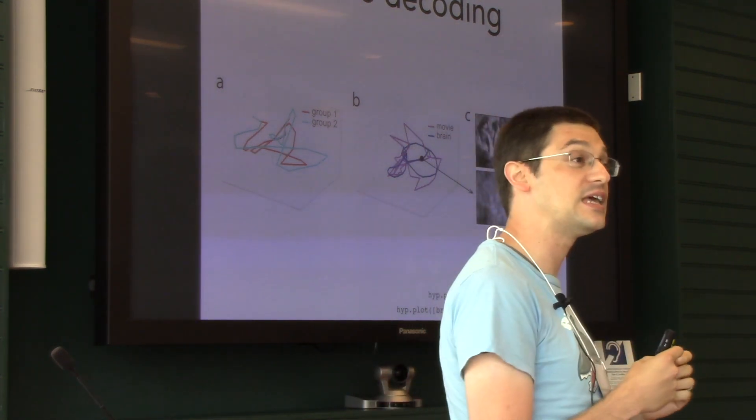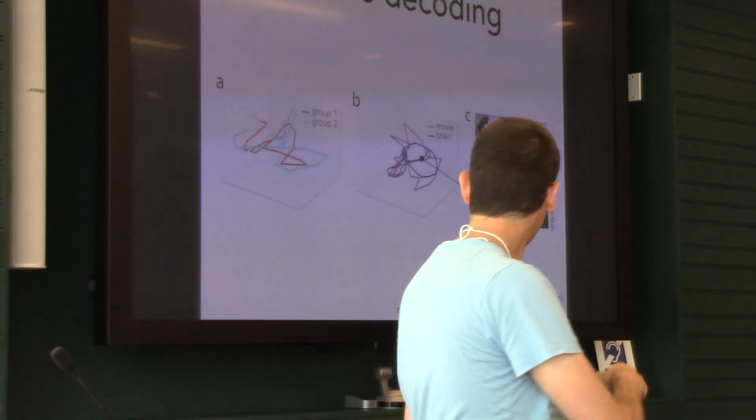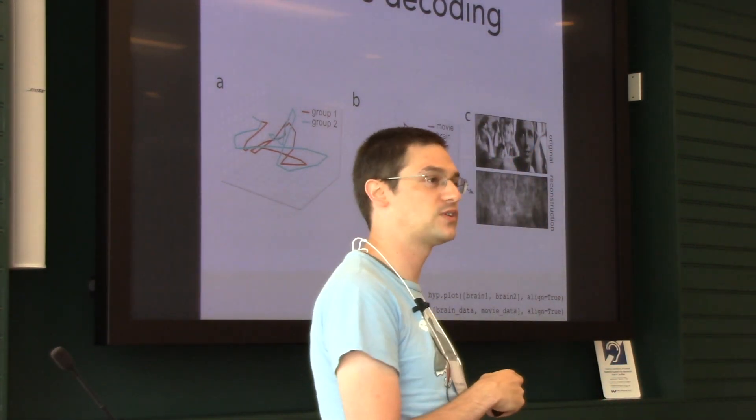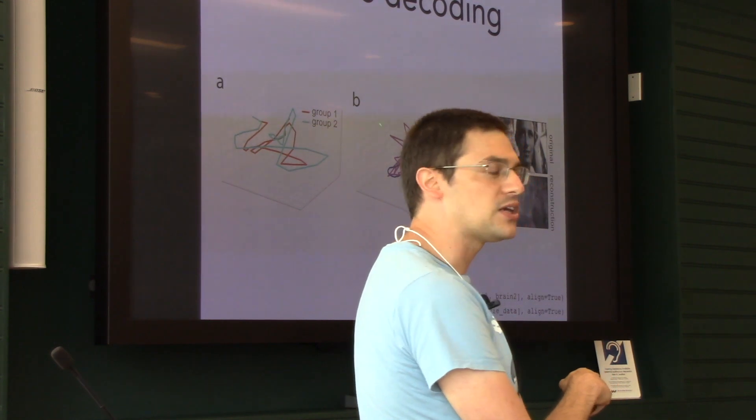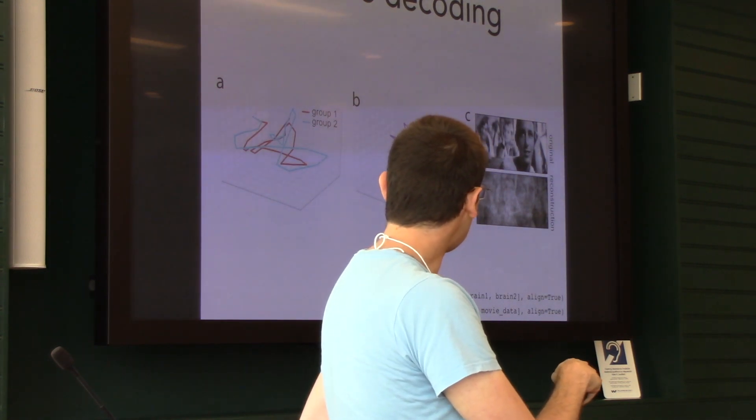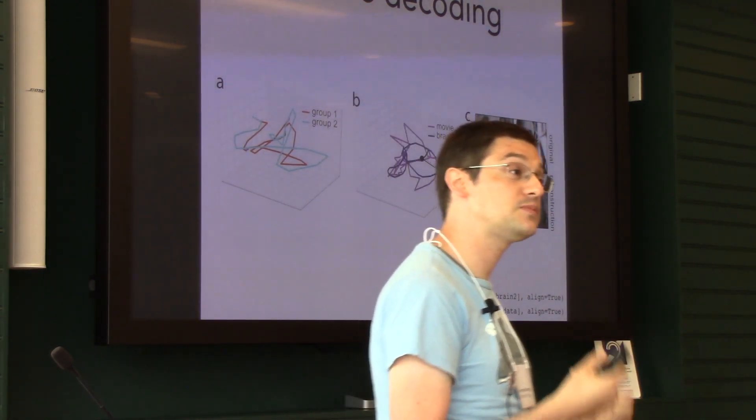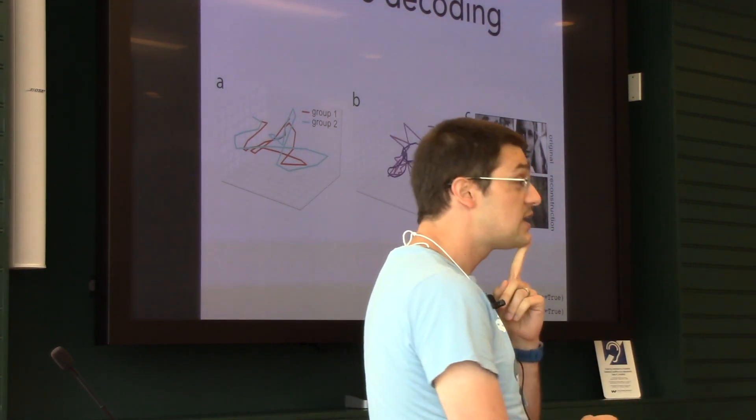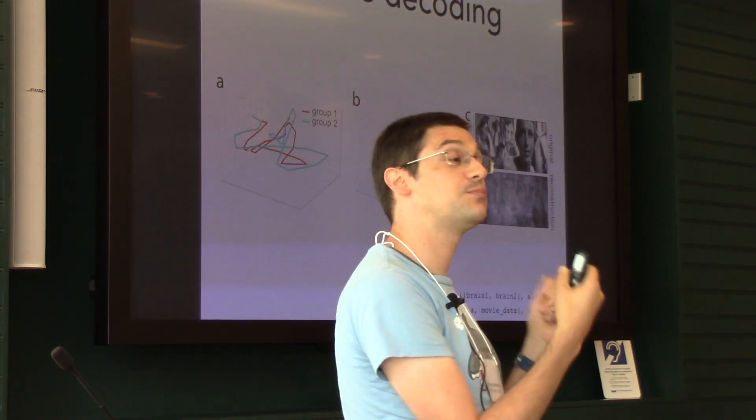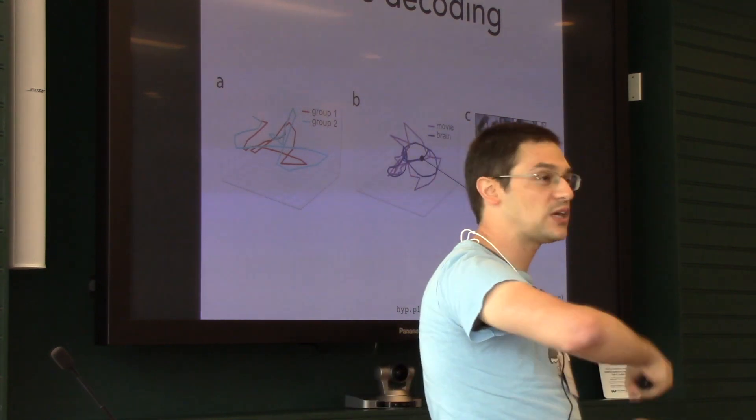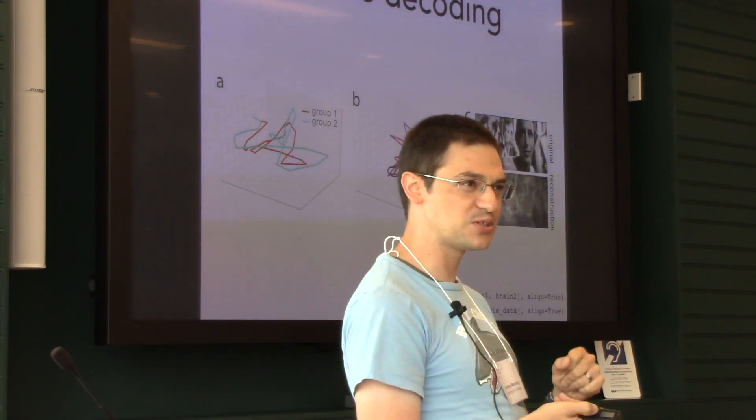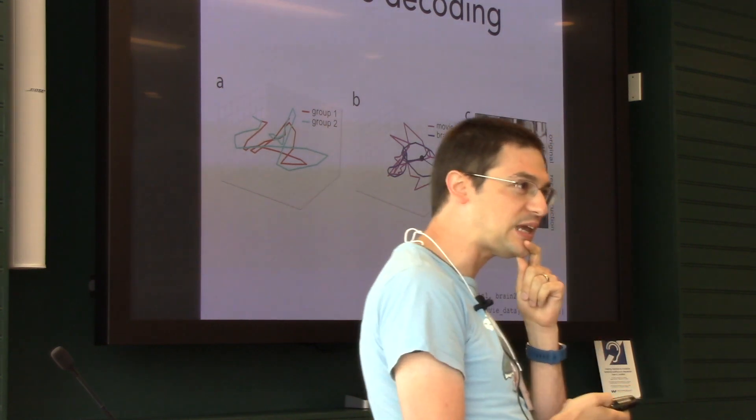Every point in brain space is a brain pattern, every point in movie space—at least the visual part of the movie—is an image. You can align different people's brains to each other and see how the shapes of different people's brain patterns over time are similar and different. But you can also align spaces that are originally incompatible with each other. You can project the movie frames and the brain patterns onto a common space. That lets you do all kinds of cool things. Now that you have this way of projecting brain data and movie data into a common space, you can do the inverse mapping.